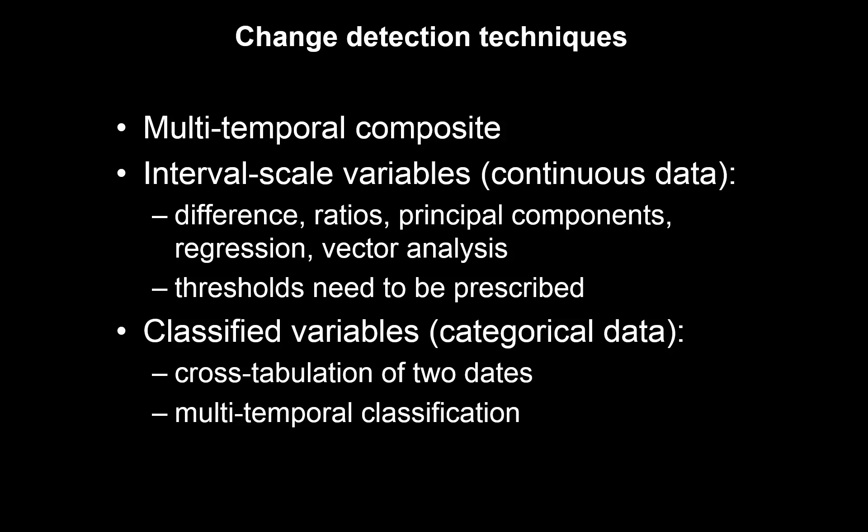So which are the techniques that we can use to detect the changes? We can mainly use three different techniques. First of all, we can use multiple temporal composites. For continuous data, we can use differences, ratio, principal component analysis, variation analysis, or vector analysis. This kind of analysis needs to establish a threshold to determine what constitutes change. And then if we have categorical data, we can do, for example, cross-tabulation of two dates or multi-temporal classification.